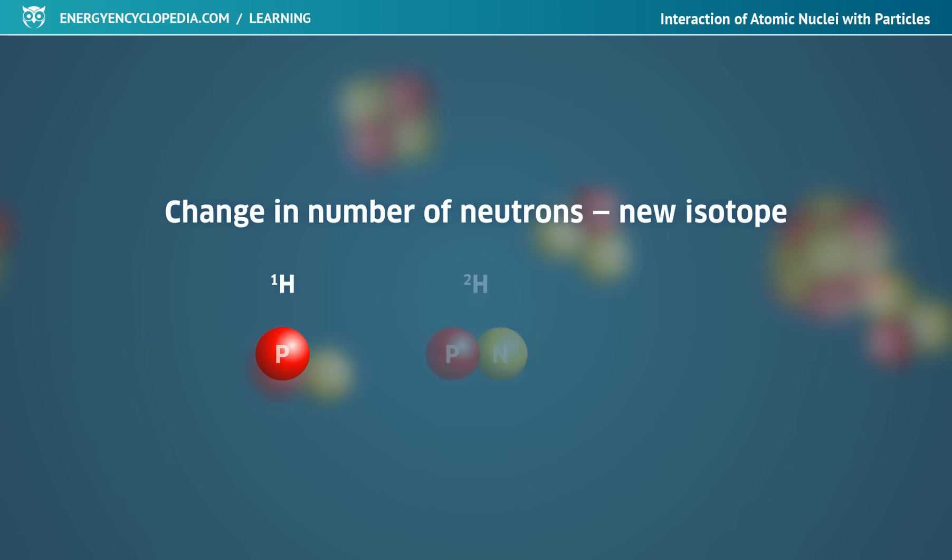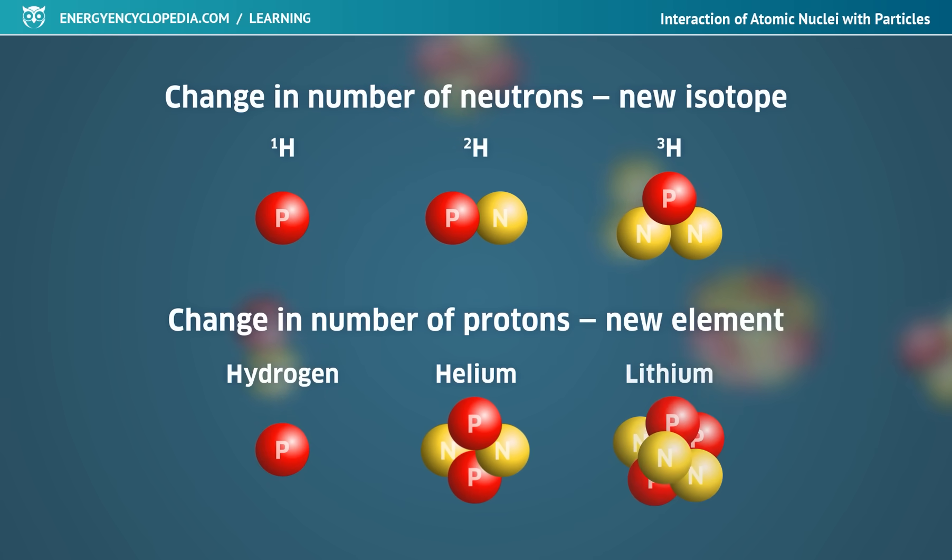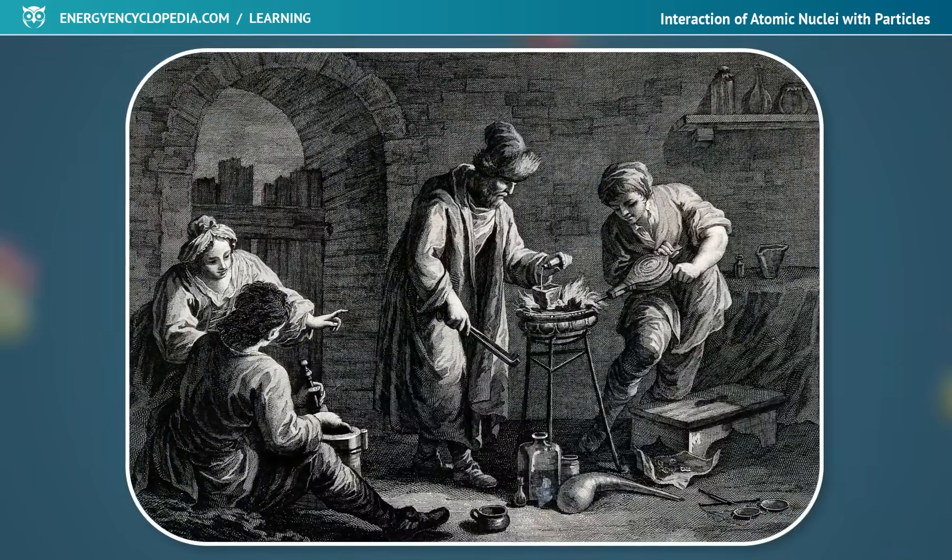By changing the number of neutrons, the nucleus changes to another isotope of the same element. Changing the number of protons always means the transmutation of the original nucleus to the nucleus of another element. Transmutation is actually a dream come true of medieval alchemists.